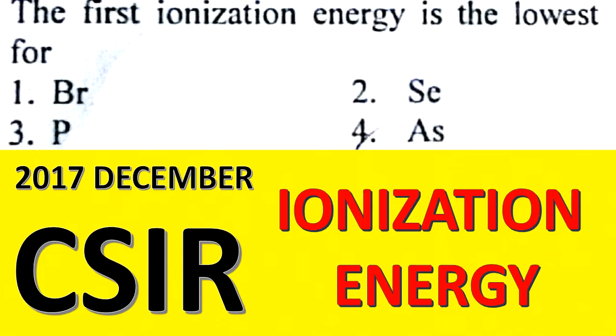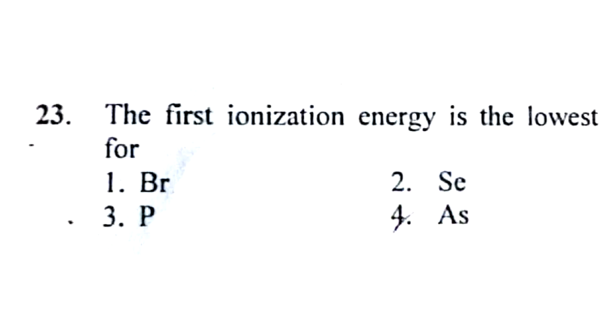Hello and welcome back to AB Chemistry. Today we are with a question based on ionization energy. This was a question from 2017 December. The first ionization energy is the lowest for: options are given bromine, selenium, phosphorus, and arsenic.